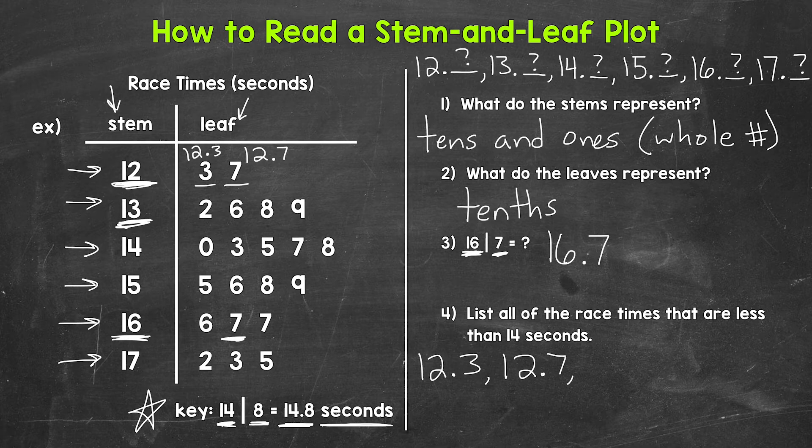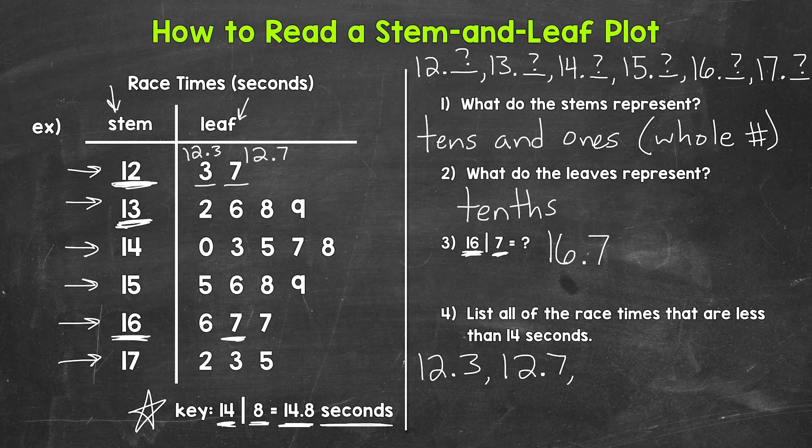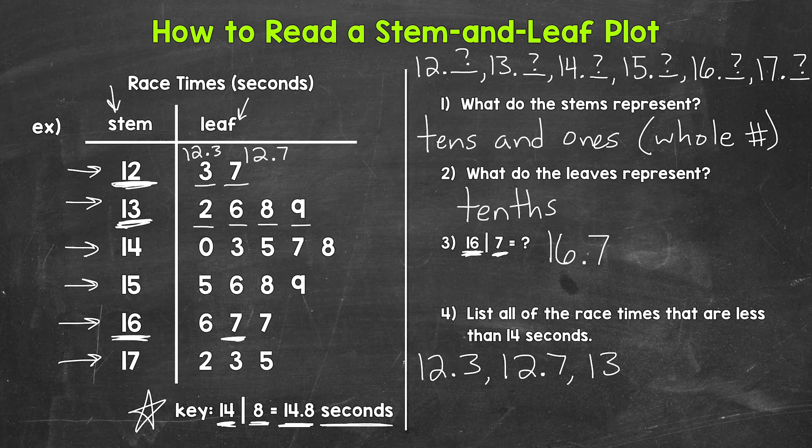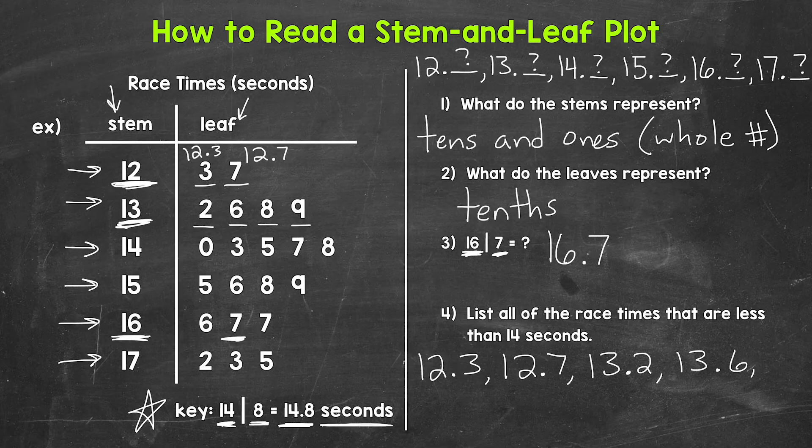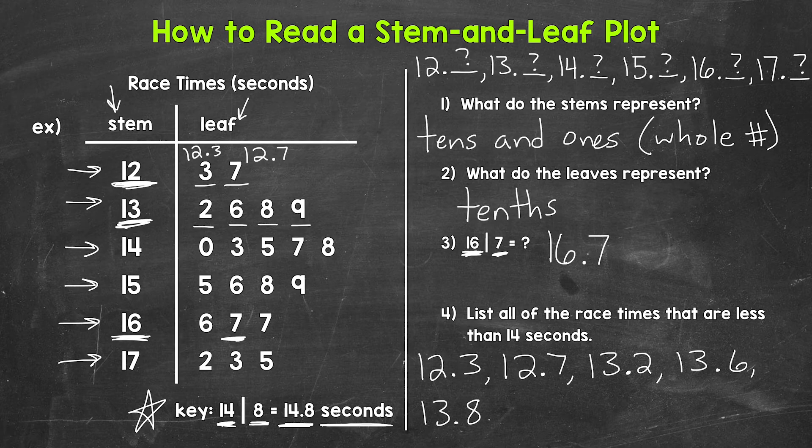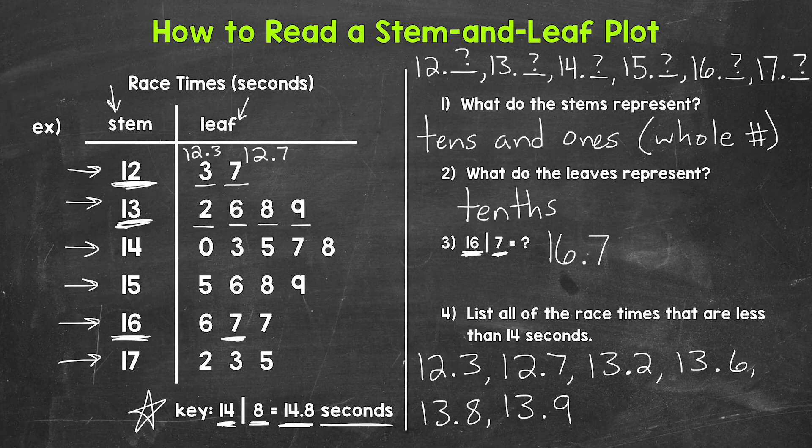Now let's move on to the stem of 13. We have a leaf of 2, 6, 8, and 9. So we have 13 and 2 tenths, 13 and 6 tenths, 13 and 8 tenths, and then 13 and 9 tenths. So those are all of the race times that are less than 14 seconds.